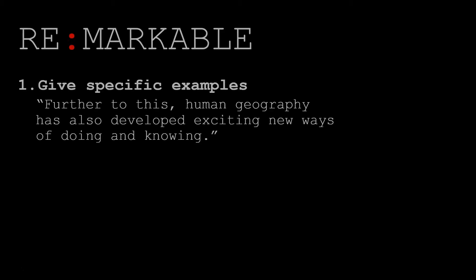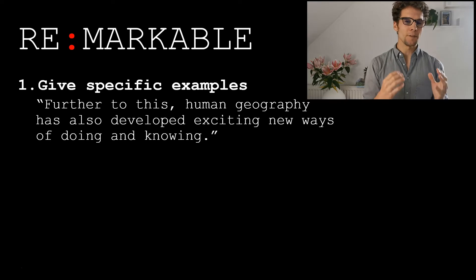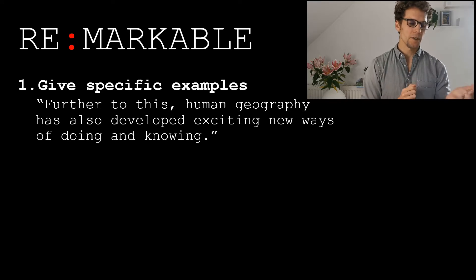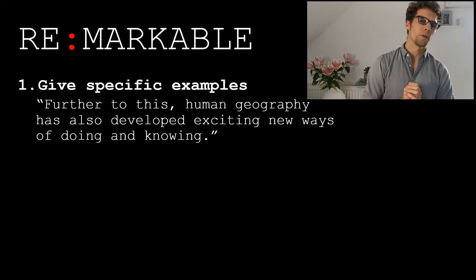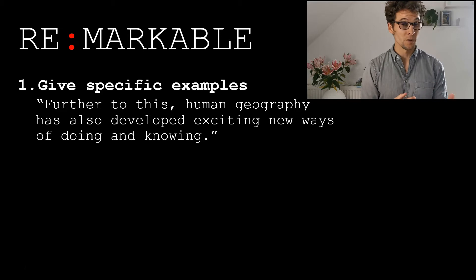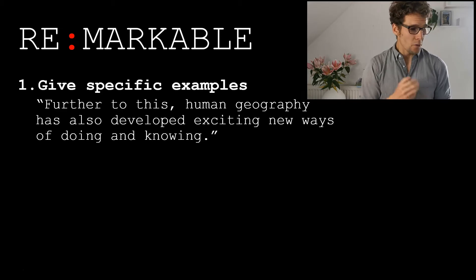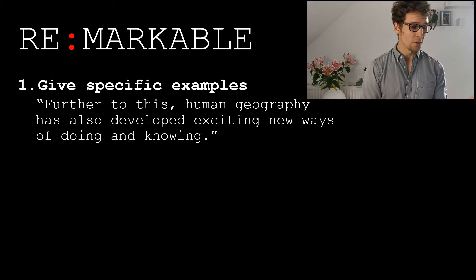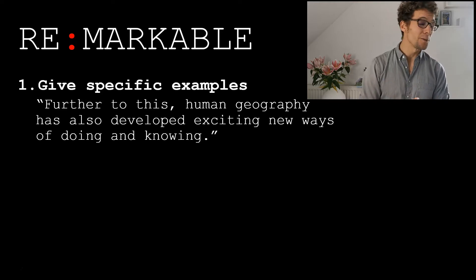So those were examples of vague writing. What can we do to fix them? There are three things you can do to any sentence you suspect might have some vagueness hidden within it. The first thing is to give specific examples. Here is a sentence from one of the first essays I wrote as a student: 'Further to this, human geography has also developed exciting new ways of doing and knowing.' You can probably see the problem already — 'doing and knowing.' What does that even mean?